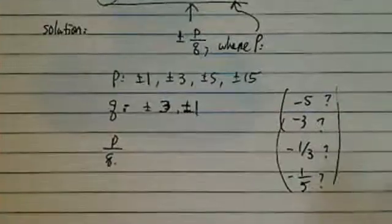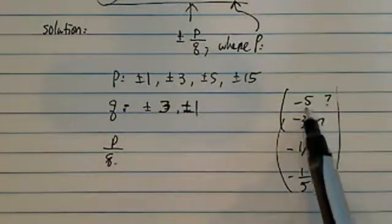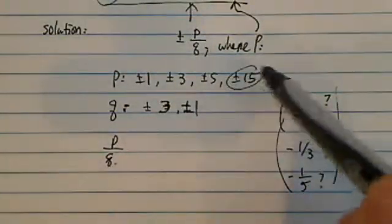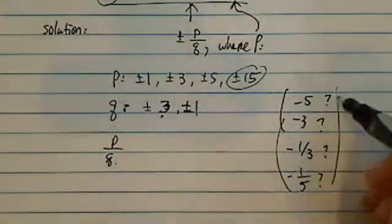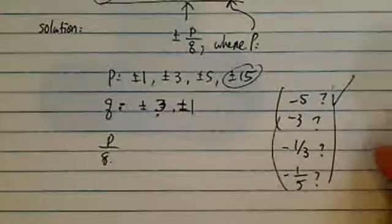Let's examine those and see what happens. Let's see. Minus 5. Yes, we can get minus 5 if I have plus minus 15 divided by plus minus 3. So minus 5 is possible. We'll put a check mark on there.